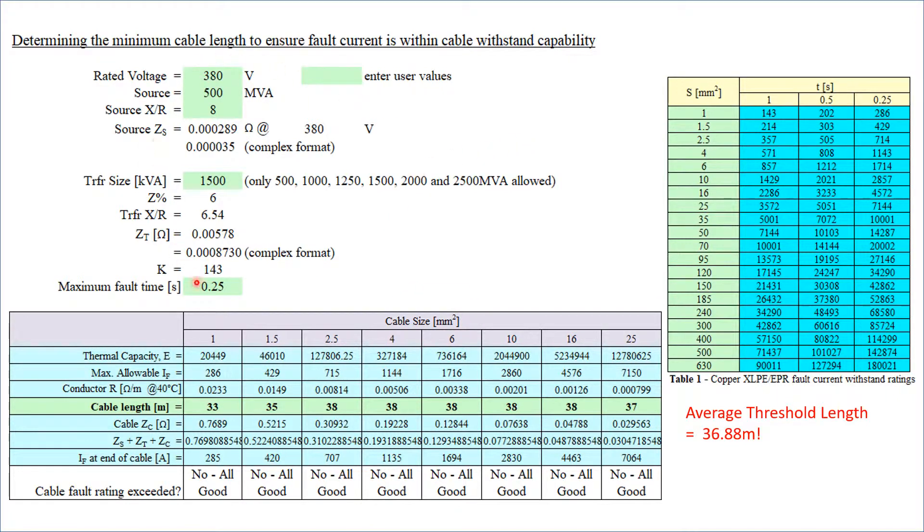So looking at this again, I can now increase my cable length to see how much cable length do I require in order for my fault current at the end of the cable to be less than the actual cable rating, the withstand rating of my cable. I see for a 1 mm² cable, for example, I will need 33 meters. For 1.5, I need 35. For 2.5, I need 38, and so on. So my average threshold length, the TL, is 36.88 meters.